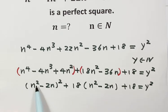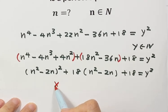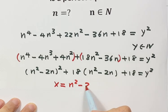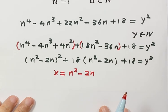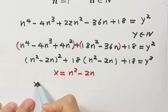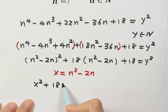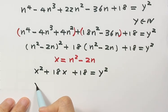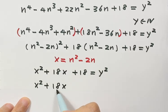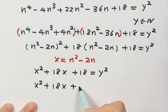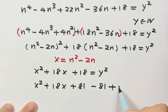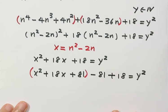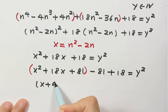Now let's take a look. We see n squared minus 2n appearing twice, so we set a new variable x equals n squared minus 2n to simplify the expression. So here we have the first term x squared, the second term 18x, then the other two terms. To make a complete square again, 18 equals 2 times 9, and 9 squared is 81, so we add and subtract 81. Combining these three together gives us x plus 9, whole thing squared.